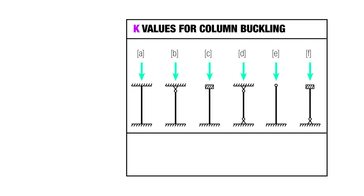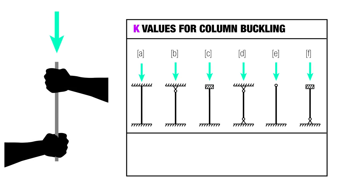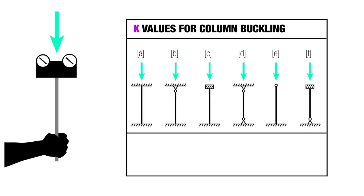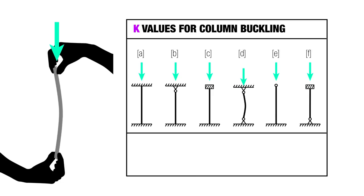Now we're looking at a table, and here you have just different flavors of column. So in A you have fixed up top and bottom. On B you have a pin connection at the top and fixed at the bottom. On C you have something that's rotation fixed but translation free on the top, and something that's rotation and translation fixed on the bottom. On D we have two pin connections.